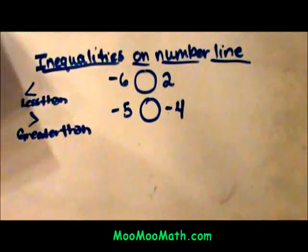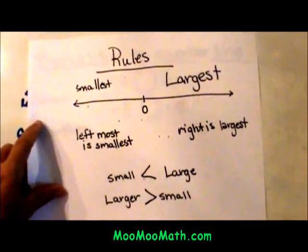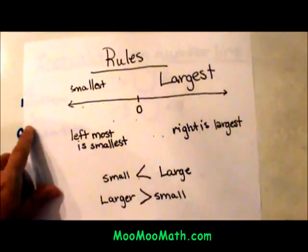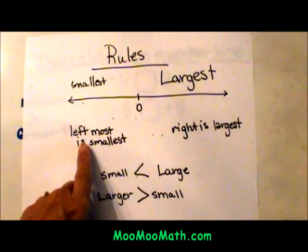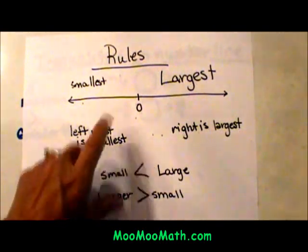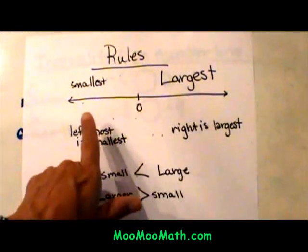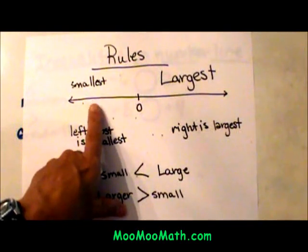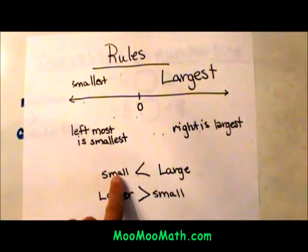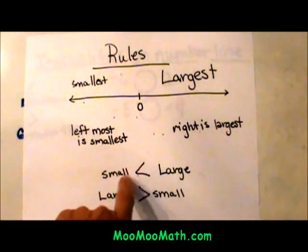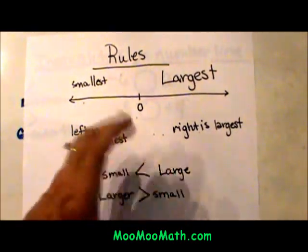Let's look at the rules. The rules for number line are the smallest number is always the left most number. If you go to the number line and graph your points, the smaller one is always going to be on the left. This is how you would write your inequality. The small one points to the smaller one and this is the larger one.